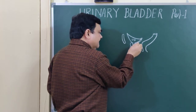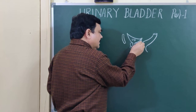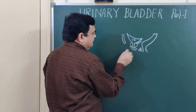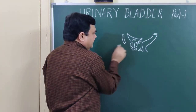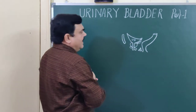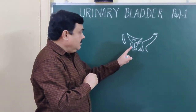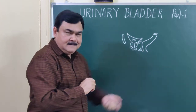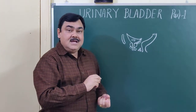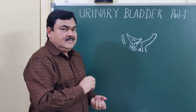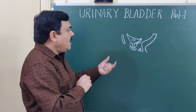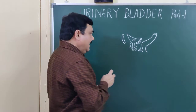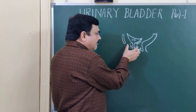This is the vas deferens, and here is the seminal vesicle. This is the prostate. Here is the neck of the ureter. This is the male pelvis — the male pelvic cavity in which the ureter is situated. So this is the diagram of the male ureter.